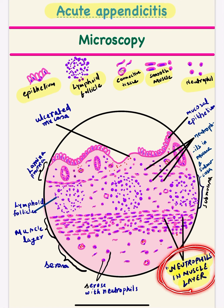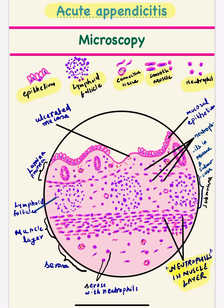The next layer is the muscularis propria. As I told you in the last lecture, neutrophilic infiltration of the muscularis layer is most pathognomonic for acute appendicitis, so we have to draw neutrophils in this layer. The last layer is the serosa, again composed of fibrovascular connective tissue, where we also show congested blood vessels.